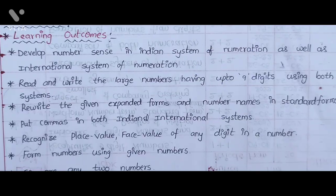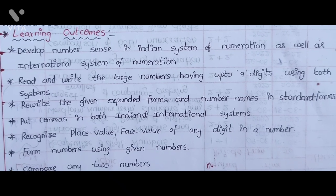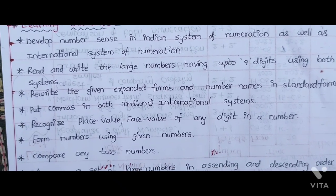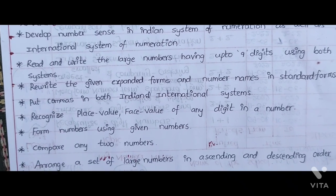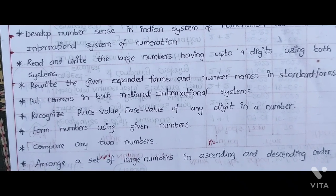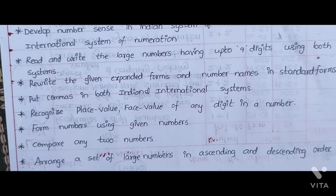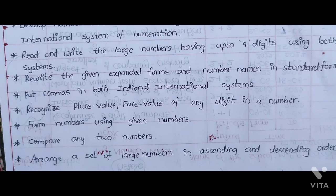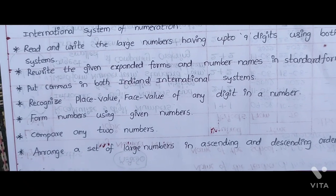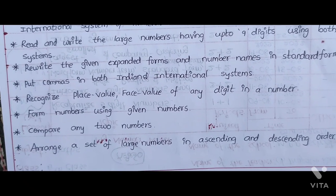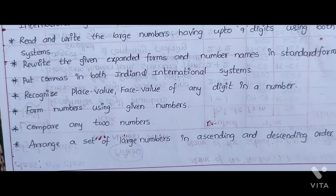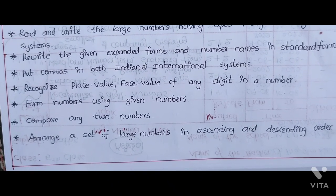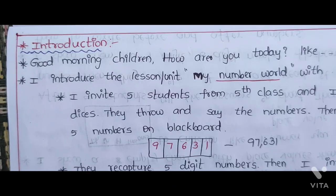Learning Outcomes: Develop Number Sense in the Indian System of Numeration as well as the International System. Read and Write large numbers having up to 9 digits using both systems. Rewrite given Expanded Forms and Number Names in Standard Forms. Put commas in both Indian and International Systems. Recognize Place Value and Face Value of any digit in a number. Form numbers using given digits. Compare any two numbers. Arrange a set of large numbers in Ascending and Descending Order.